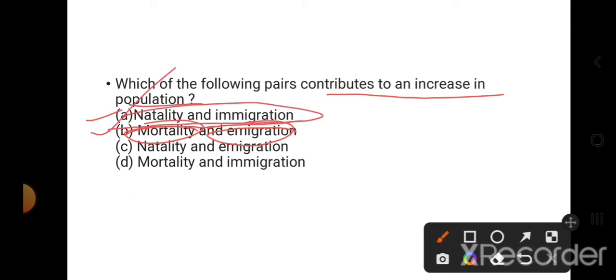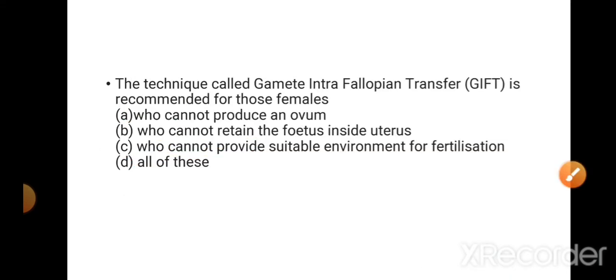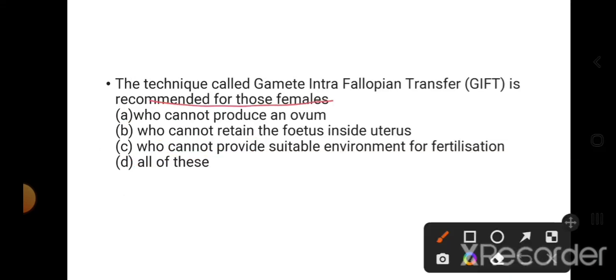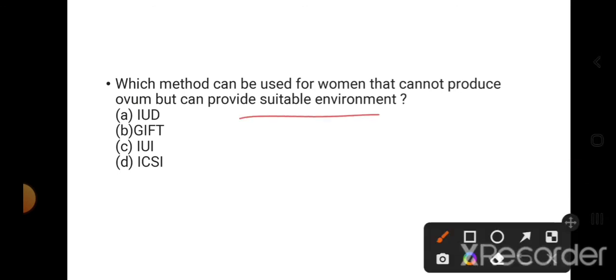Which of the following is an ART, assisted reproductive technology? IUD, GIFT, or ZIFT, or both B and C. So the right answer is GIFT and ZIFT. The technique called gamete GIFT is recommended for those females who cannot produce an ovum. So this is the right option. Which method can be used for the woman that cannot produce ovum but can provide suitable environment? The right answer is GIFT.